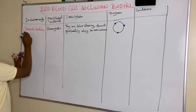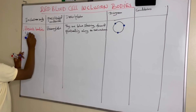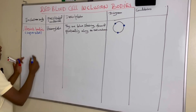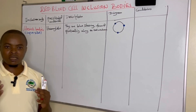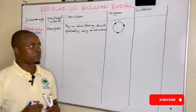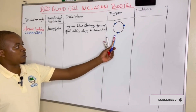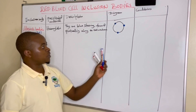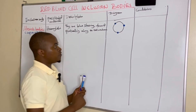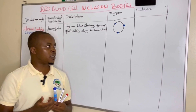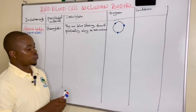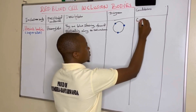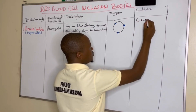These Heinz bodies can be demonstrated better using supravital stains, including new methylene blue and brilliant cresyl blue. Sometimes when passing through the spleen, the spleen tends to remove them to form a keratocyte or a blister cell. They are seen in conditions such as glucose-6-phosphate dehydrogenase (G6PD) deficiency.